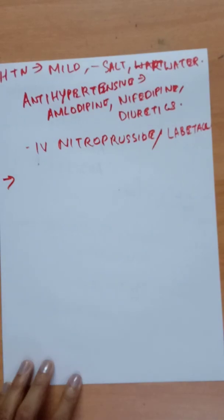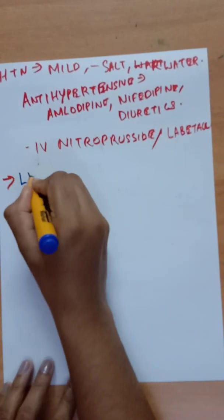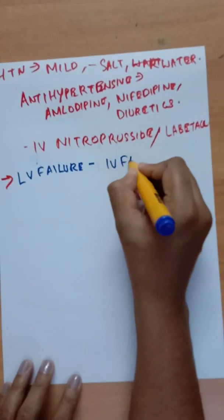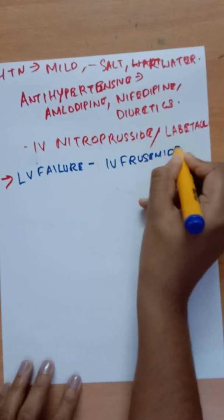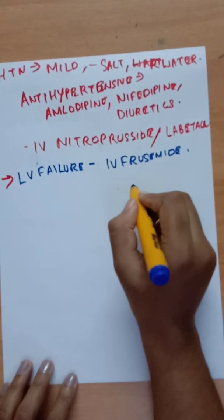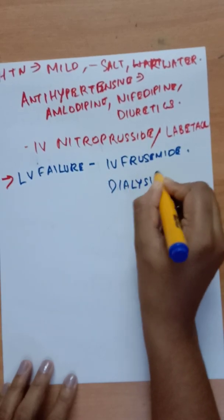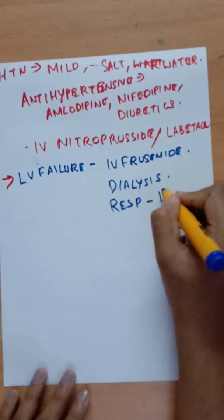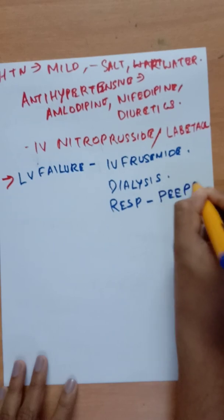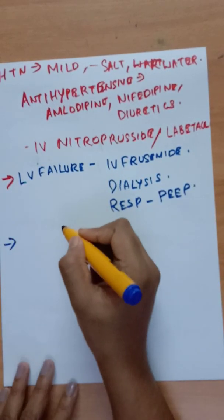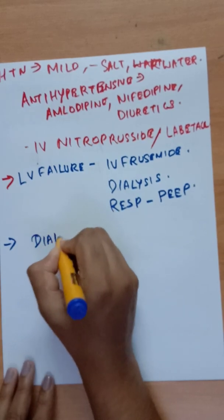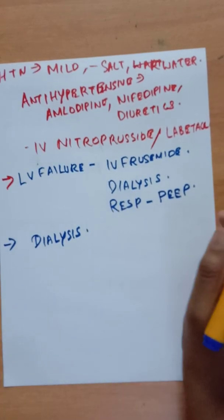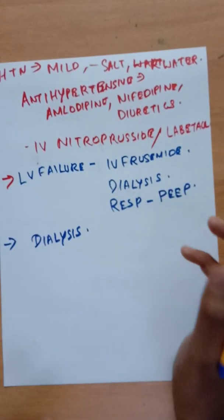For left ventricular failure: hypertension should be controlled, IV furosemide can be given, and if diuresis is not occurring, dialysis may be needed along with respiratory support with positive end-expiratory pressure. Dialysis is also indicated for prolonged oliguria, severe renal failure, fluid overload, or life-threatening electrolyte disturbances.